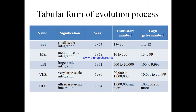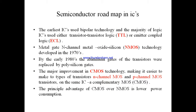A tabular form indicates the generation of integrated circuits and how many transistors are used in each. Regarding the semiconductor roadmap: the earliest ICs used bipolar technology, and the majority of logic ICs used either Transistor-Transistor Logic (TTL) or Emitter-Coupled Logic (ECL). Metal gate N-channel MOS (NMOS) technology developed in the 1970s. By the early 1980s, aluminum gates were replaced by polysilicon gates. The major improvement was CMOS technology, making it easier to place both N-channel and P-channel MOS transistors on the same IC. The principal advantage of CMOS over NMOS is low power consumption.